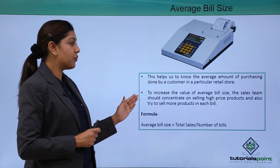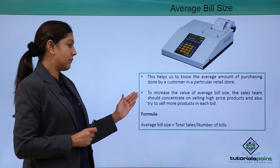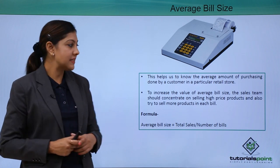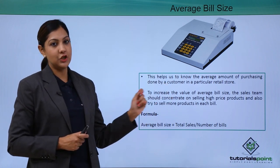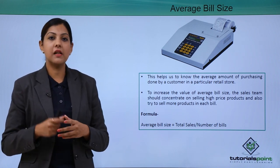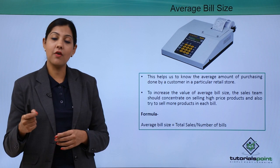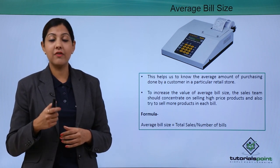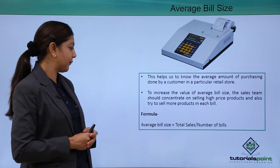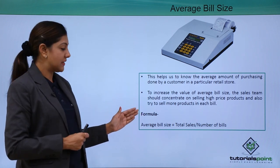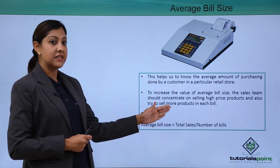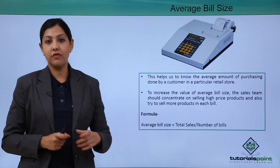To increase the value of the average bill size, the sales team needs to concentrate on selling more high-priced products as well as trying to sell more products in each bill. Every salesperson can contribute by selling higher-priced products and offering multiple products through add-on selling and cross-selling. The formula is: Average Bill Size = Total Sales ÷ Number of Bills.